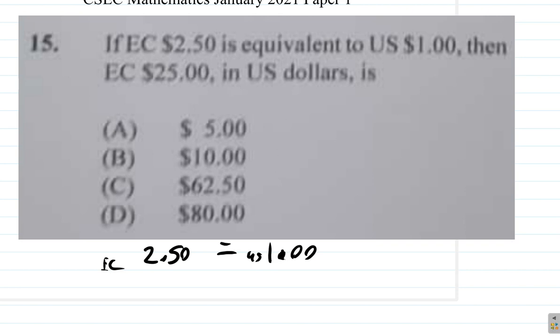You don't show working here because this is multiple choice. What is 25 EC? Well, you can see that if you multiply this by a certain number, you get 25, you must multiply the one by that number too. You can consider ratio.